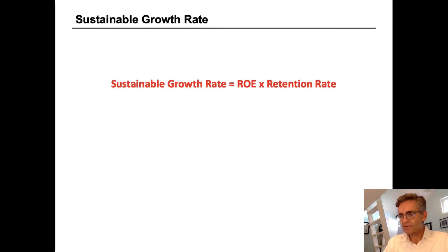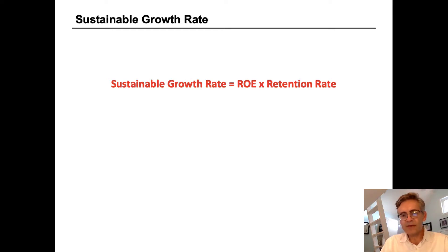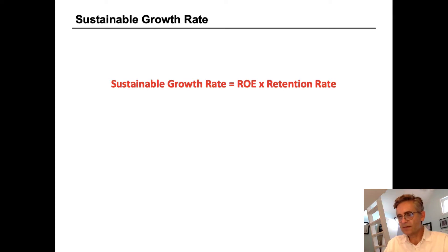Now we're going to look at the sustainable growth rate. The formula for sustainable growth is return on equity multiplied by the retention rate. The growth rate of a firm is a function of the amount of net profit it retains in the firm and the return that it earns on those retained funds. This simple formula represents the maximum earnings growth that a firm can achieve without new financing. If a company grows faster than its sustainable growth rate, it must raise additional funds either from debt or equity.